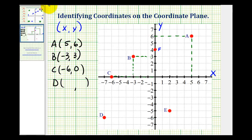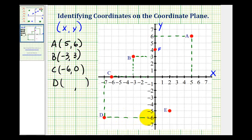Now let's take a look at point D, down here in the third quadrant. If we draw a segment straight to the x-axis, notice how it intersects the x-axis at negative seven. If we draw a segment straight to the y-axis, it intersects the y-axis at negative six. So the coordinates for point D would be negative seven, negative six.